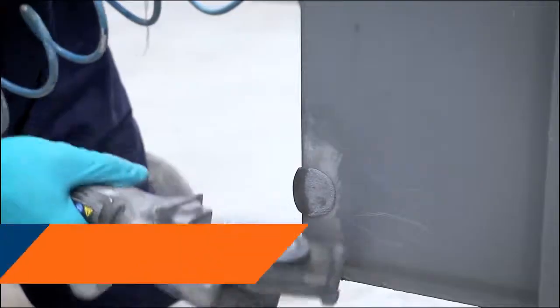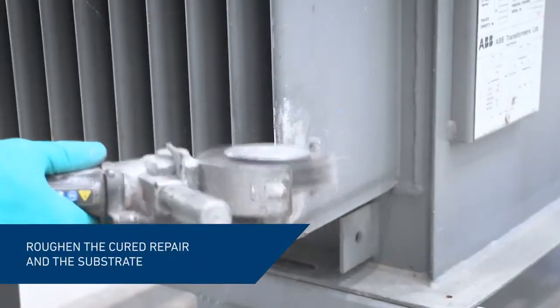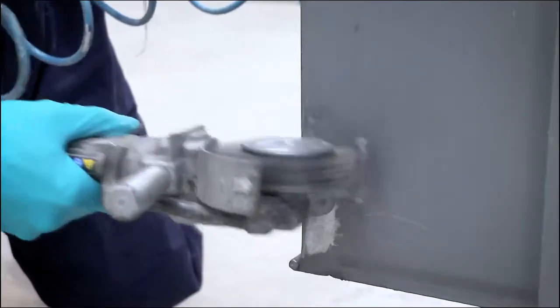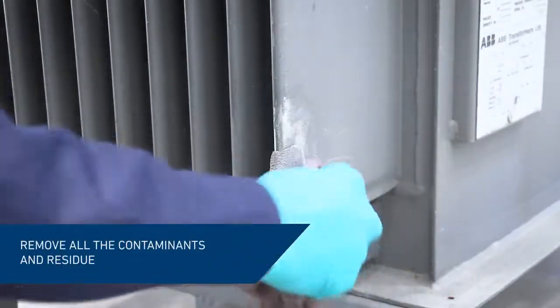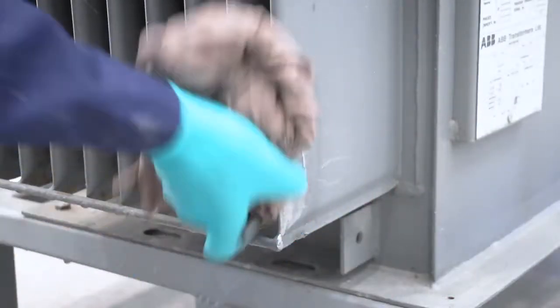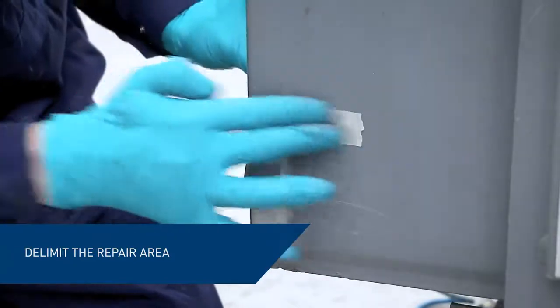Using a mechanical grinder, abrade the hardened material and the substrate. Remove all the contaminants and residue with a cleaner degreaser and delimit the area with masking tape.